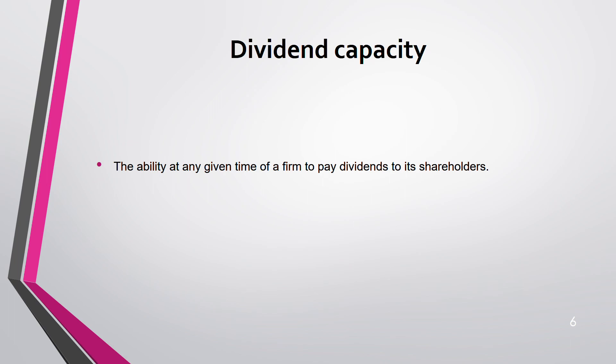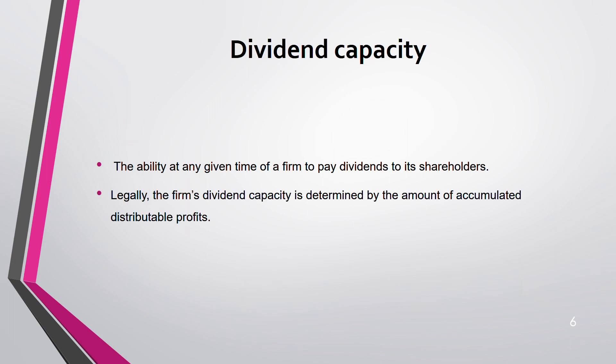Dividend capacity is the ability at any given time of a firm to pay dividends to shareholders. What is your capacity to pay dividends to shareholders today? Legally, the firm's dividend capacity is determined by the accumulated distributable profit. For example, if you have ten thousand as accumulated distributable profit, that's your legal dividend capacity.